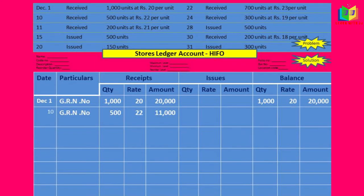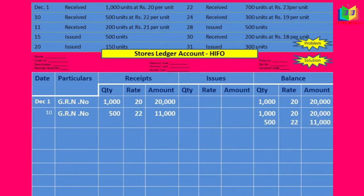Next, December 10th we have received — this is also a purchase, so I will write it in the receipt column: 500 units at a rate of 22, giving us 11,000. In the balance column I will write it under the 1000 units already there.